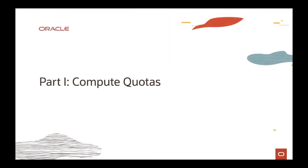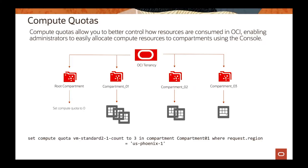Let's start with compute quotas. In this diagram, I have my OCI tenancy with multiple compartments deployed. You can deploy compute resources on each one of those compartments. If you want to prevent people from going beyond a certain limit on those compartments, you can write a compute quota policy. You also have a service limit for your tenancy defining the amount of resources you can consume. If you need to increase the service limit, you can open a service request with Oracle to go beyond those limits.